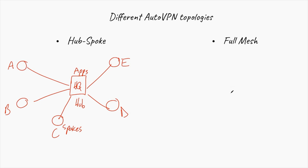The contrary is the full mesh. We can have the same situation here. This is your headquarters. You have branch A, you have branch B, branch C, branch D, and branch E.